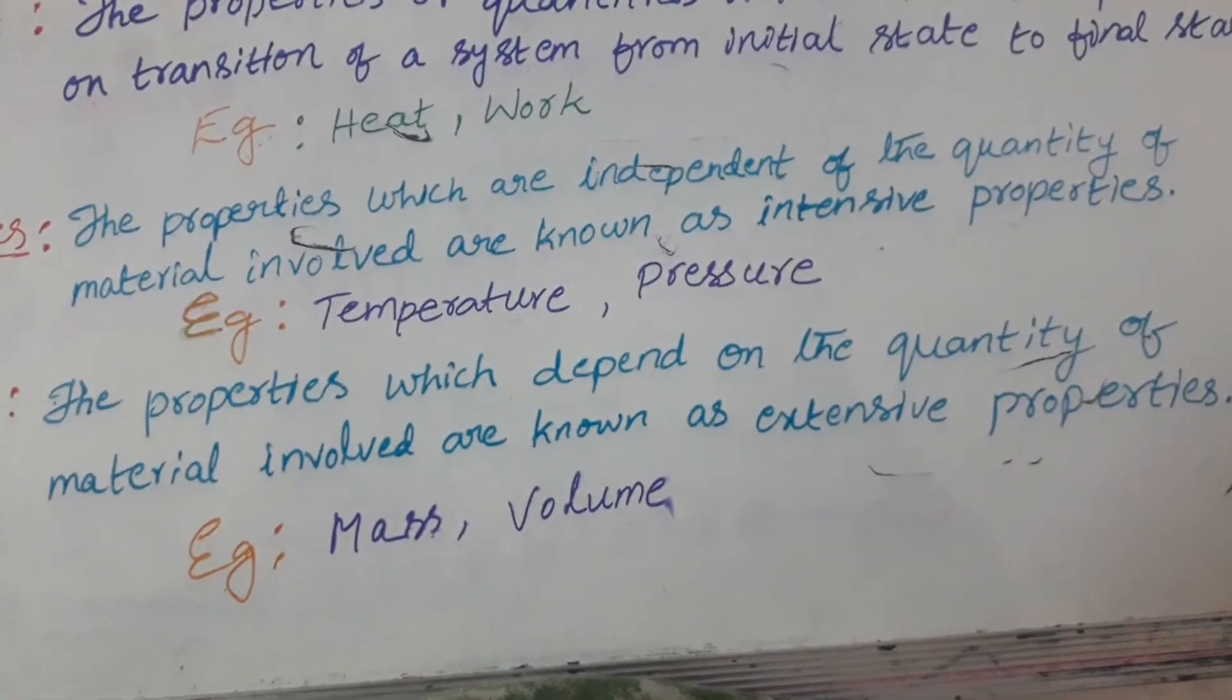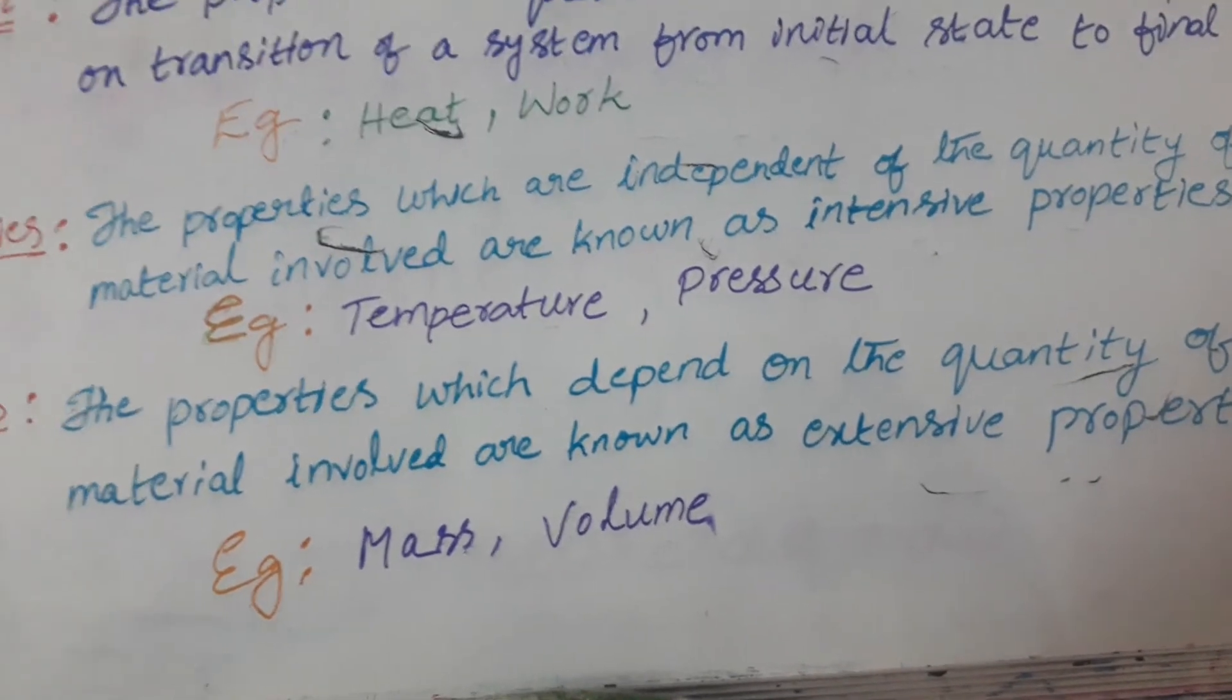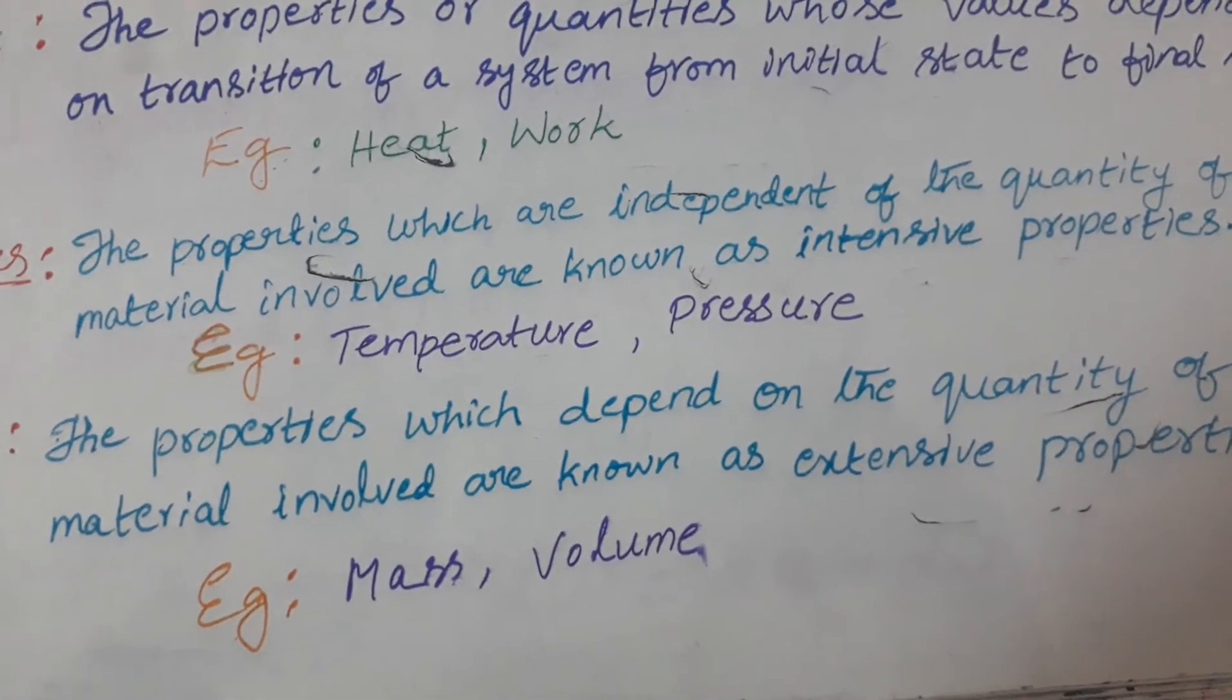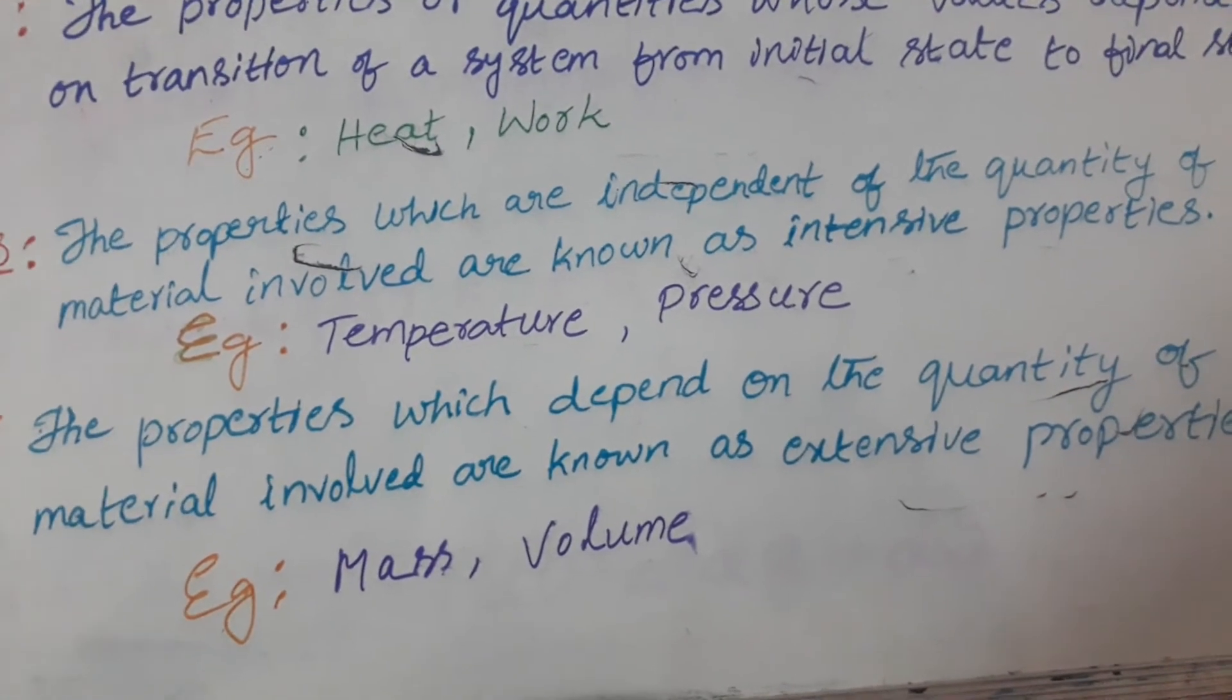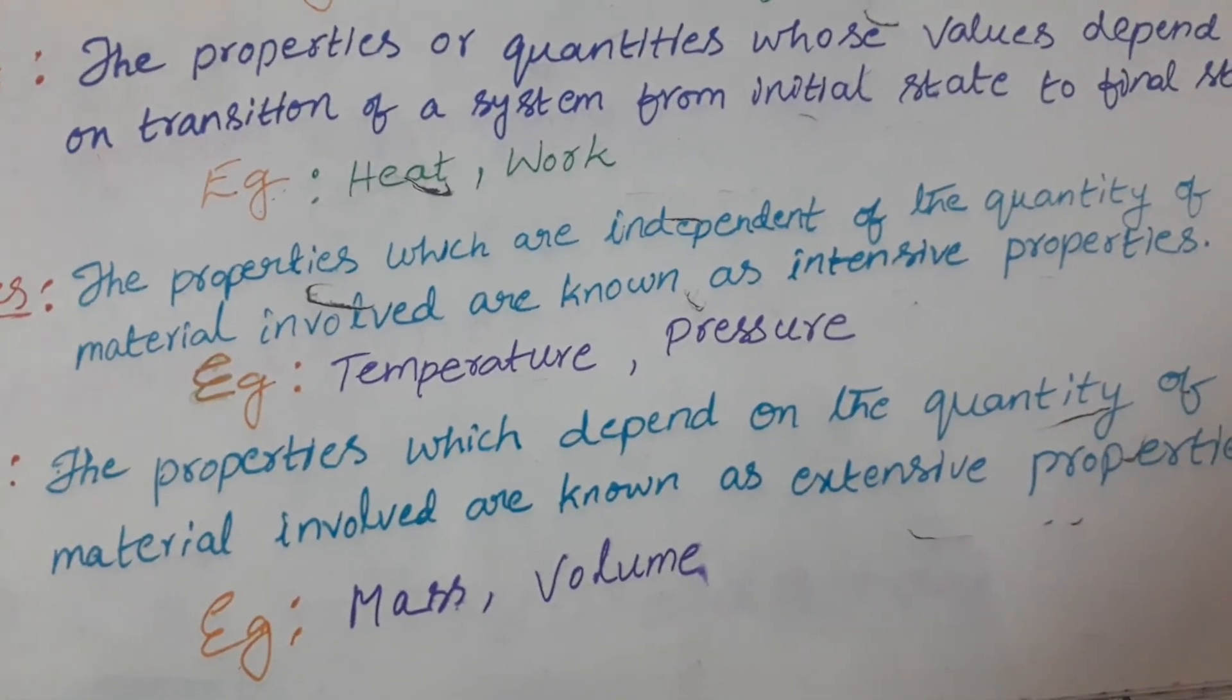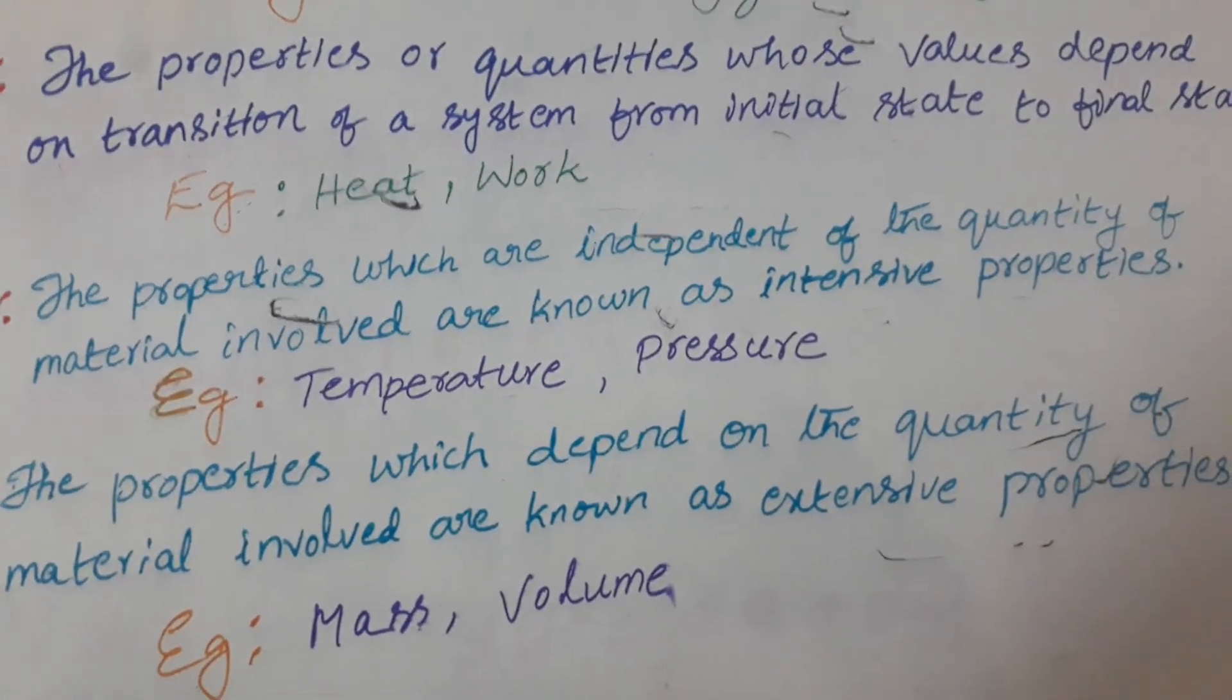The next property is extensive properties. The properties which depend on the quantity of material involved are known as extensive properties. Extensive means it depends on the quantity of material. Intensive means it is independent of the quantity of material. The example is mass as well as volume. I have given only two examples for each of the properties, but you can take many examples depending upon the situation.